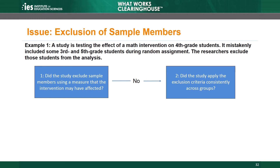Second, we ask whether the study applied the exclusion consistently to both groups. The researchers excluded 3rd and 5th grade students from both the intervention and comparison groups, so the answer to this question is yes. These answers suggest the exclusions have little potential to introduce bias, so the exclusions do not count as attrition.